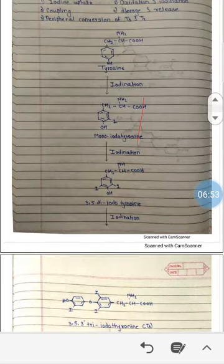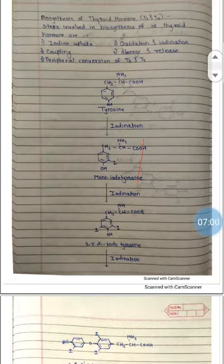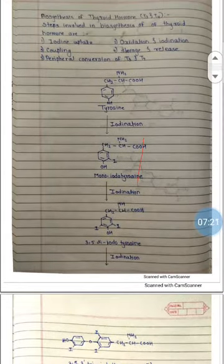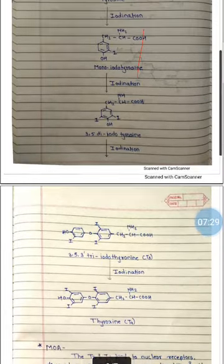The biosynthesis of thyroid hormones T3 and T4 involves the following steps: iodine uptake, oxidation and iodination, coupling, storage and release, and peripheral conversion of T3 and T4. Iodination is a major step for the biosynthesis of thyroid hormones.